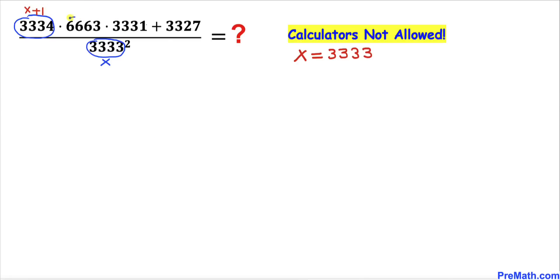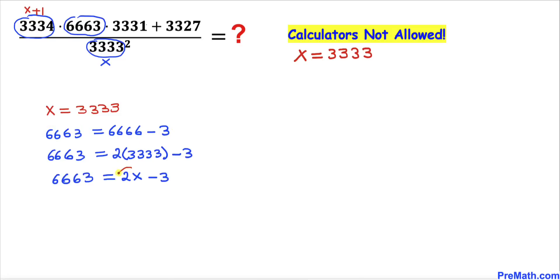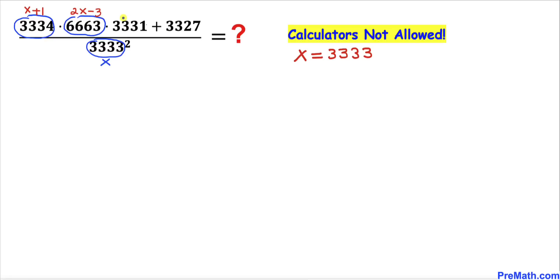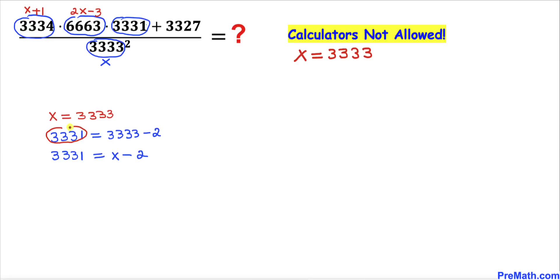Now let's focus on 6663. This can be written as 6666 minus 3, which simplifies to 2x minus 3. So I am going to replace 6663 with 2x minus 3. Next, let's focus on 3331 — this turns out to be x minus 2, so I am going to replace 3331 with x minus 2.